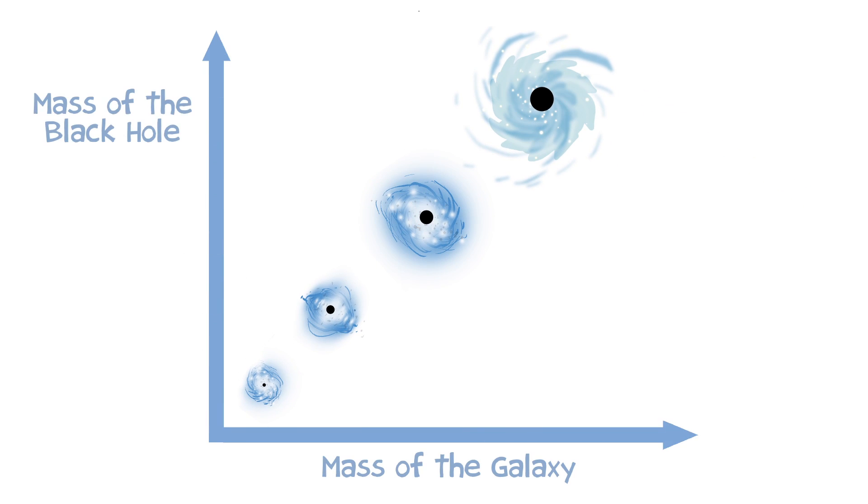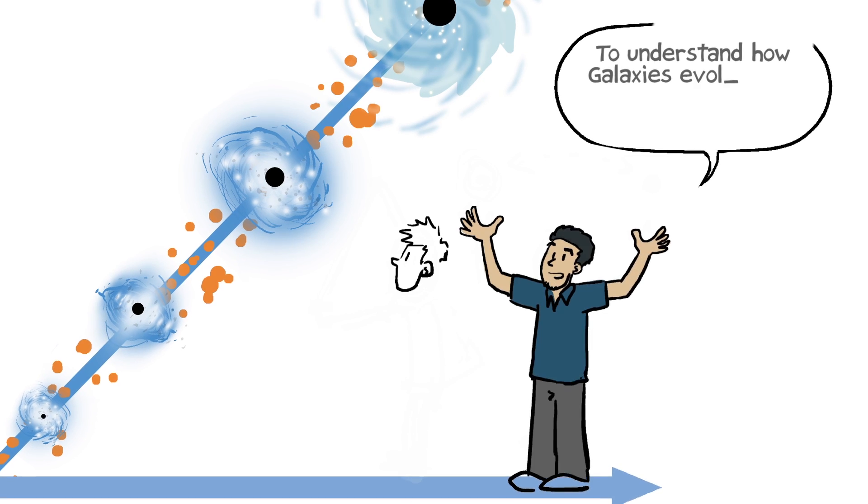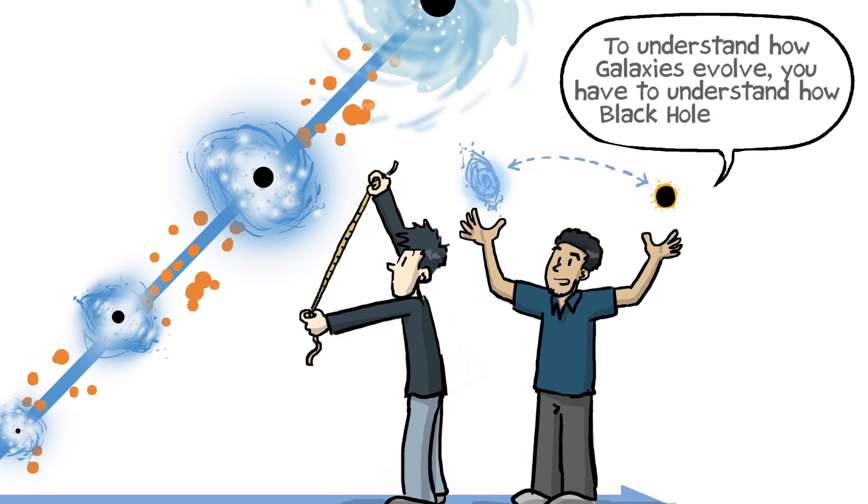If I was plotting the mass of the galaxy against the mass of the black hole, you would find that this is a tight line, with the mass of the black hole increasing in step with the mass of the galaxy. So to understand how galaxies evolve, you have to understand how black holes evolve.